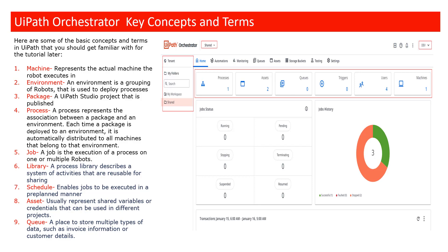In assets, you can also store credentials so people cannot see the password. In production environments, credentials are usually stored in assets, and third-party tools like CyberArk or Windows Credentials can also be used. Queues are a way to store multiple types of data so that a process can work on those items one by one.